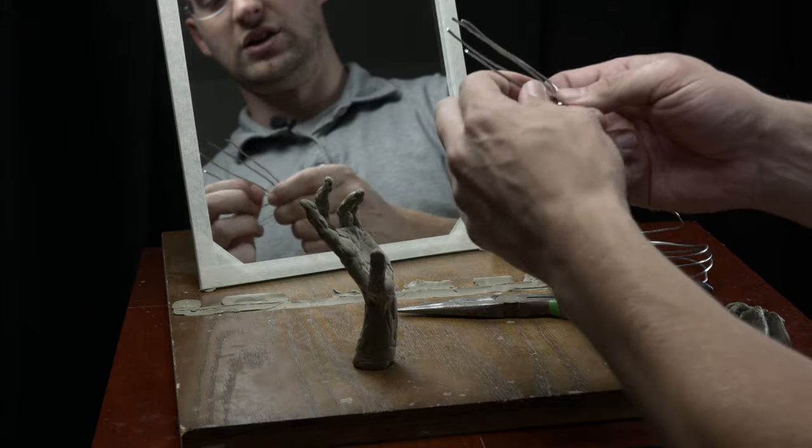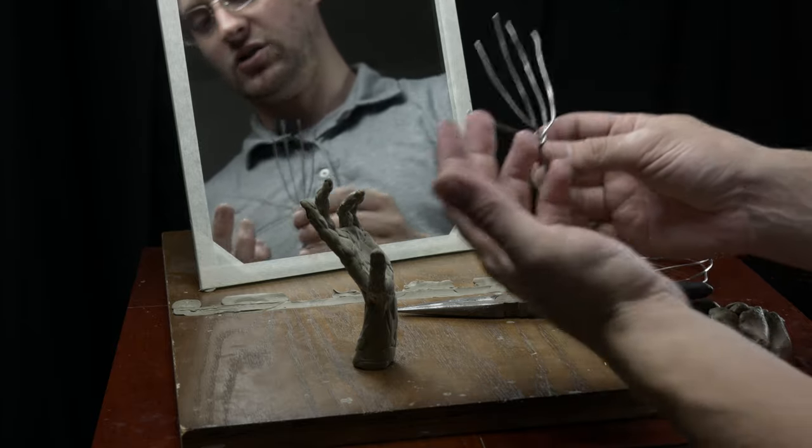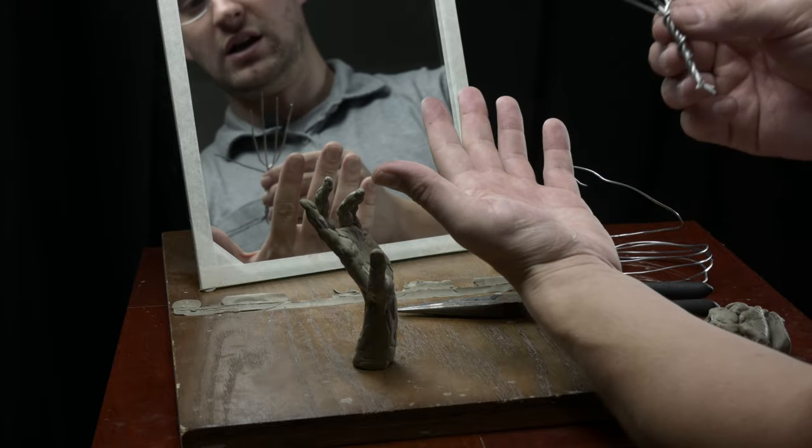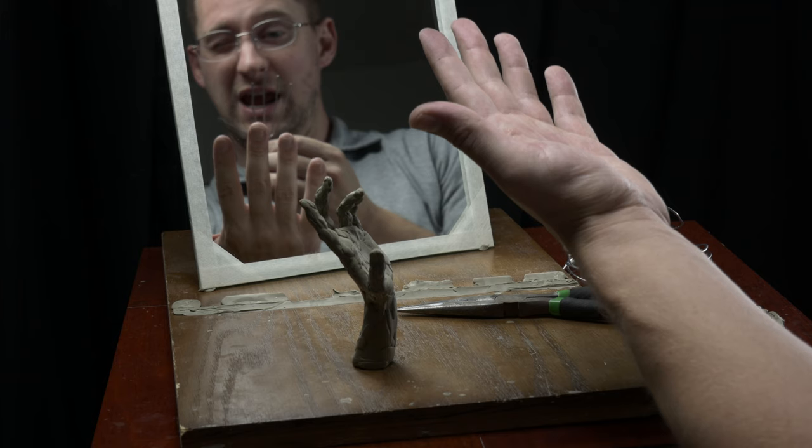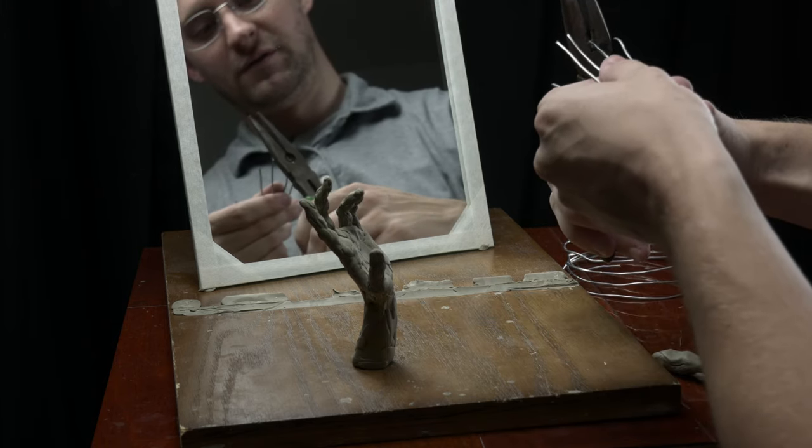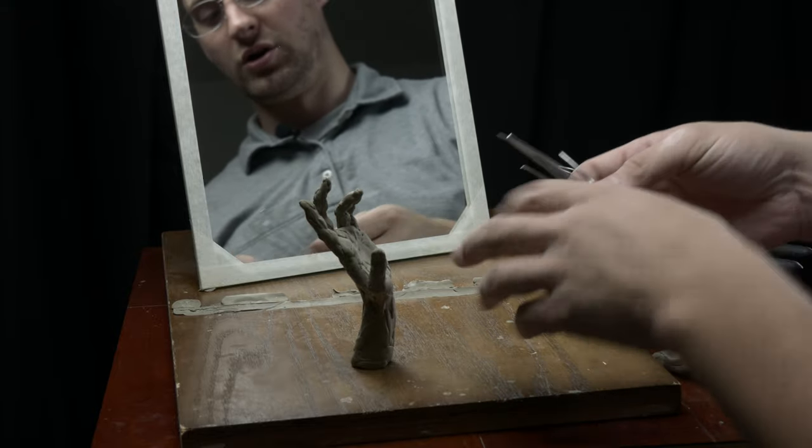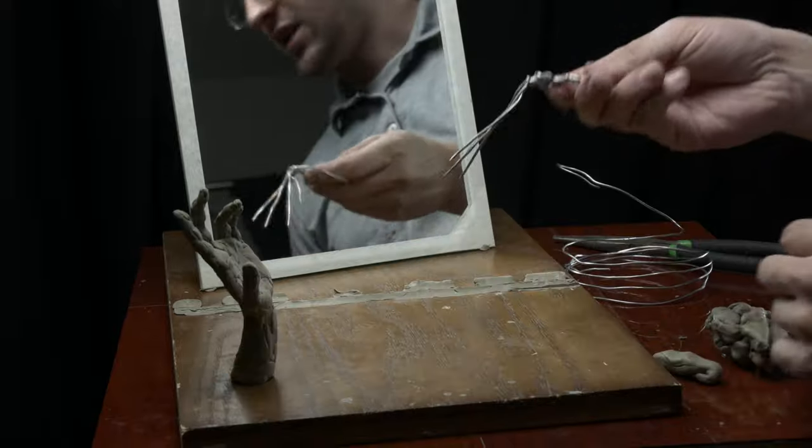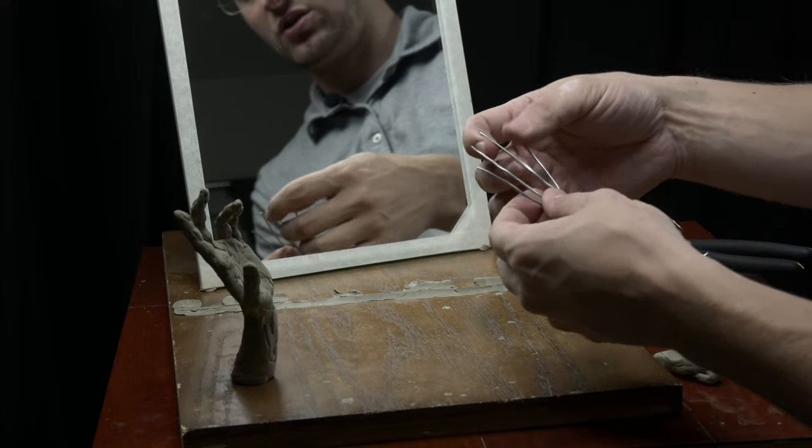But right now I'm not worrying about the gesture or anything really, except just getting wires that look about the right length. I'm just taking it, closing one eye, holding it up directly to my hand, and checking the lengths. Just a tiny bit off of these ones. Now we're ready to start posing the armature.